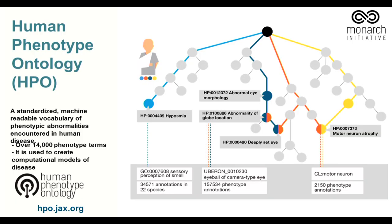I wanted to introduce a little bit more about ontologies. The human phenotype ontology is a member of the OBO Foundry ontologies. An ontology is a controlled terminology, and essentially it's a graph where the relationships between the terms are logically defined — it's a computable graph.